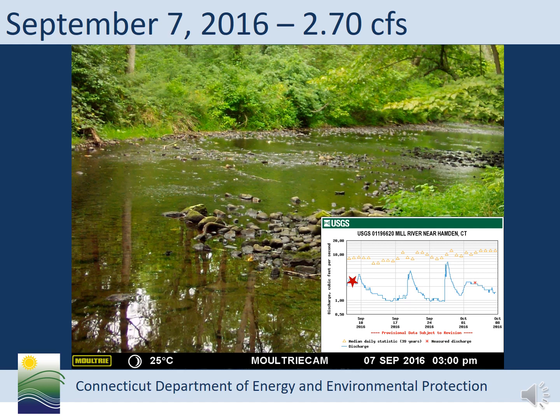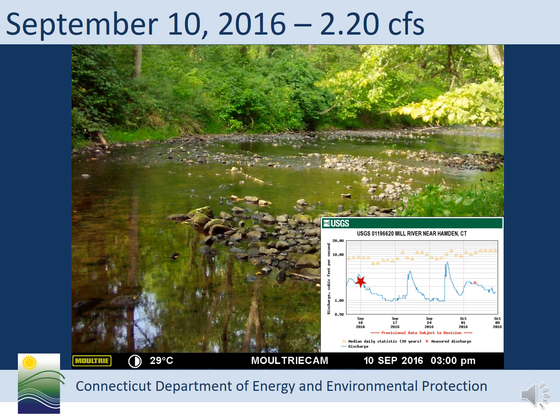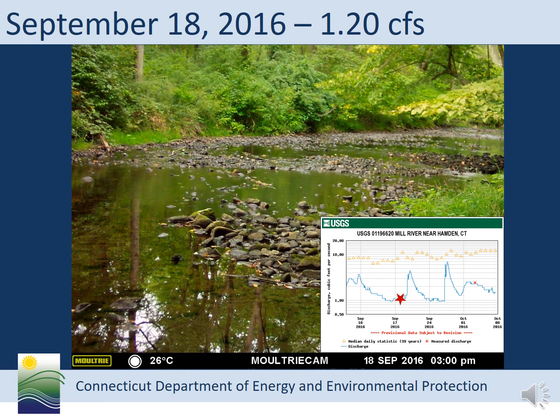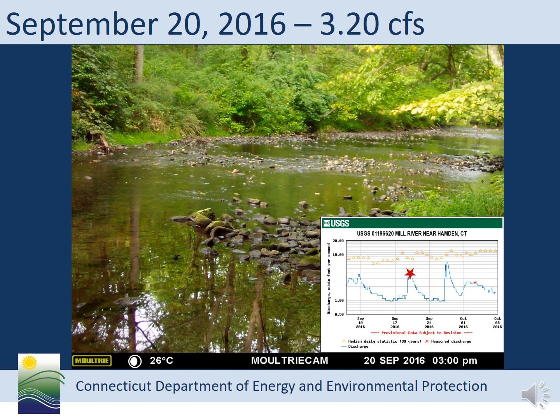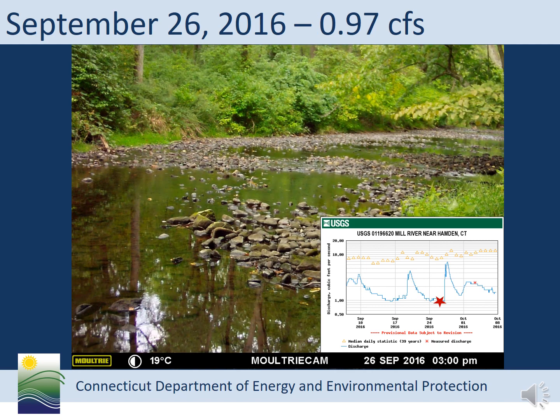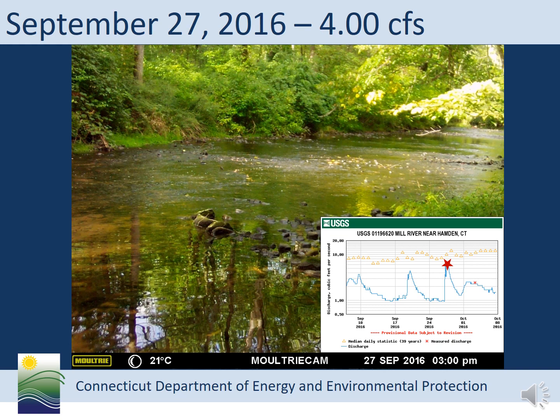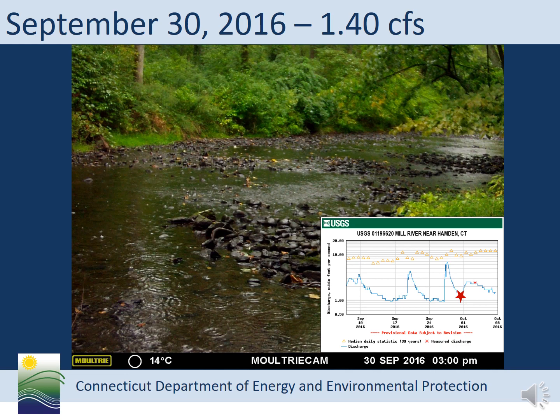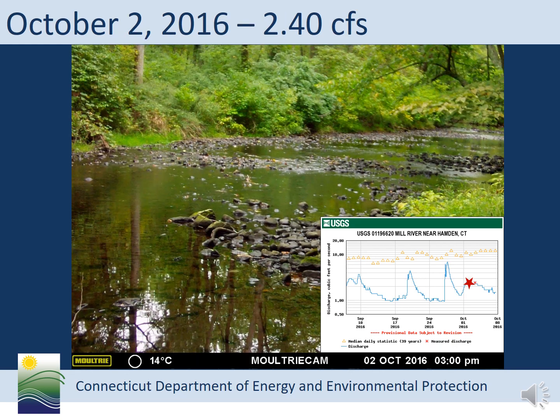I want to take you through an example of one of our trail cameras located near a USGS stream gauge. This is a short period from September 7th through October 2nd of 2016. If you pay attention to the red star on the hydrograph, you'll see how it correlates with the stream flow in the picture. On September 7th, stream flow was 2.7 cubic feet per second. On September 10th, 2.20 CFS, dropping to 1.2 CFS — you can see that clearly in the picture. It jumps up to 3.2 CFS, goes back down to 0.97 CFS, jumps up to 4 CFS after a rain event, goes back down to 1.4 CFS, and ends with 2.4 cubic feet per second.